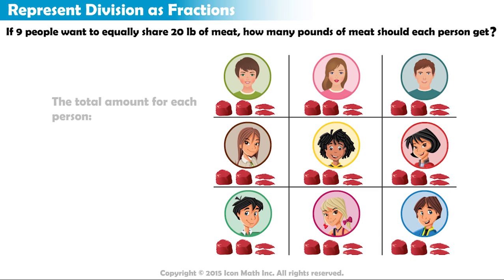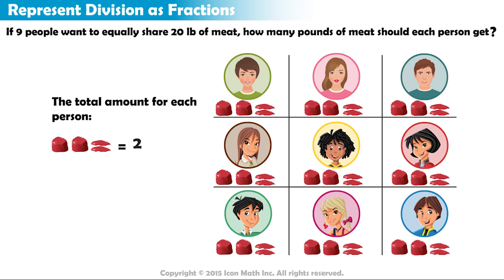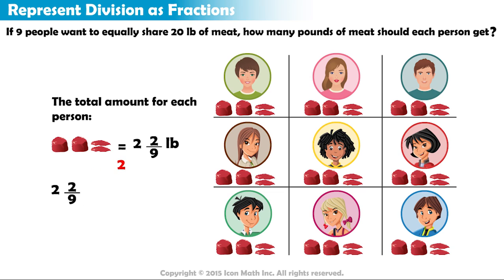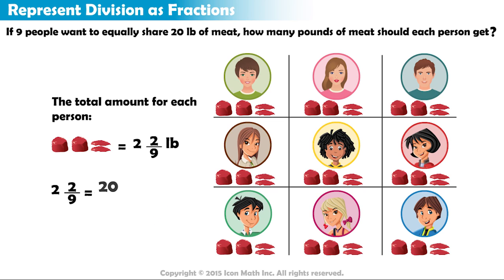The total amount of meat that each person gets is represented by two and two-ninths pounds. If we convert this mixed number into an improper fraction, we get twenty-ninths.